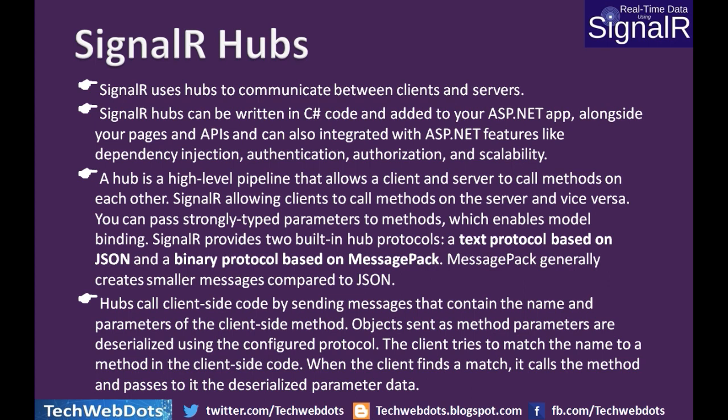SignalR provides two built-in hub protocols. One is a text protocol based on JSON, which is used for sending larger data. The other is a binary protocol based on MessagePack, which generally creates smaller messages compared to JSON. We will discuss all these things practically in our upcoming series.